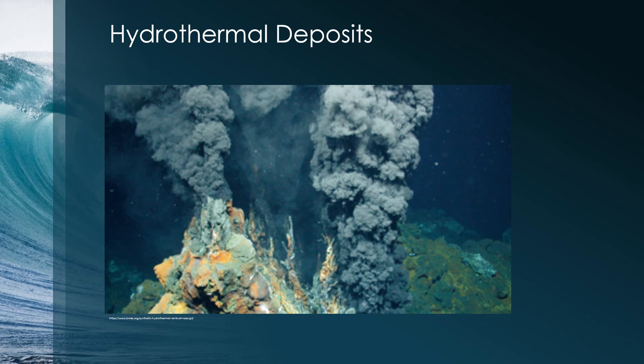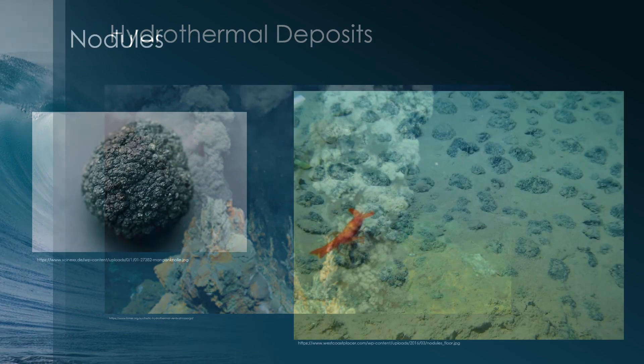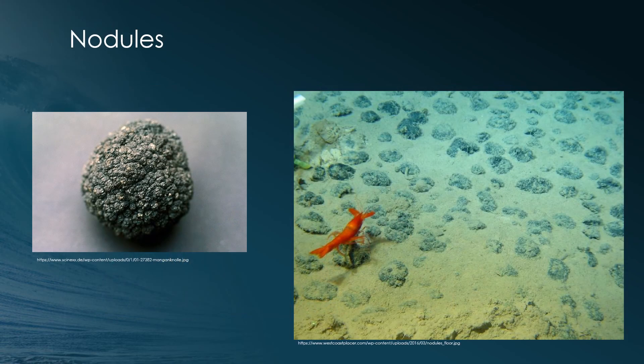Black smokers are iron and sulfide vents, while white smokers are full of silicates composed of calcium and barium. This collection of sediments often forms something called a nodule, which is essentially a collection of metals on the ocean floor. So from hydrothermal deposits, we can gather that nodules can be anything from iron to manganese to barium or calcium. However, there is another deposit that can also result in nodules, called hydrogenous deposits.